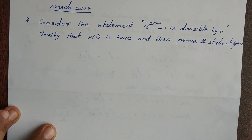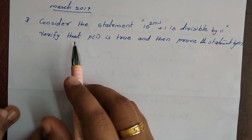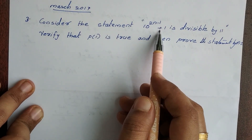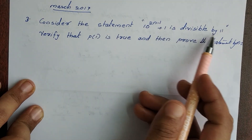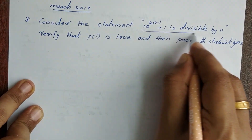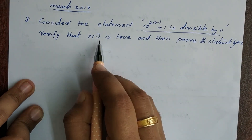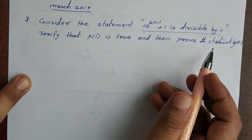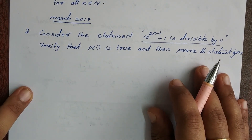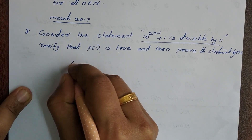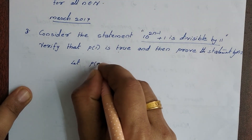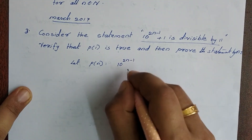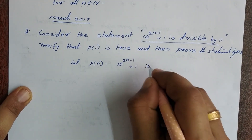Next question, March 2017. Consider the statement: 10 raised to 2n minus 1 plus 1 is divisible by 11. Verify that P of 1 is true and then prove the statement by principle of mathematical induction. Let P of n be the statement: 10 raised to 2n minus 1 plus 1 is divisible by 11.